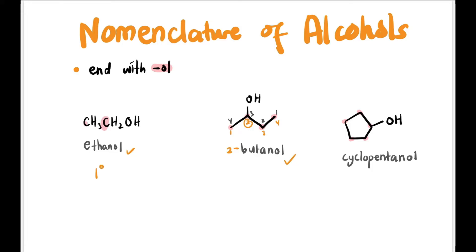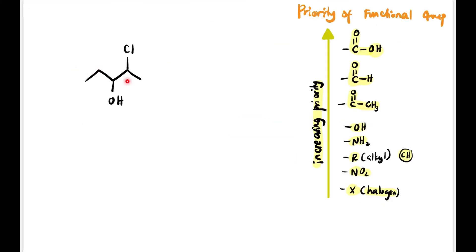Looking at the class of each alcohol: the first compound has one carbon attached to the OH carbon, so it is a primary alcohol. For butan-2-ol, two carbons are attached to that carbon, so it is a secondary alcohol. Similarly, cyclopentanol also has two carbons attached, making it a secondary alcohol.